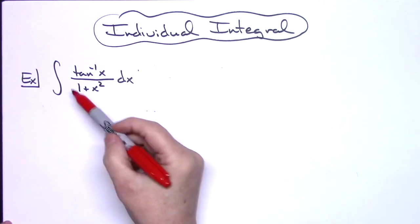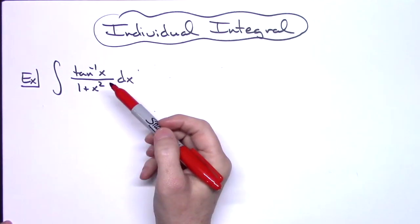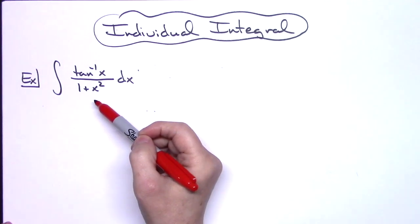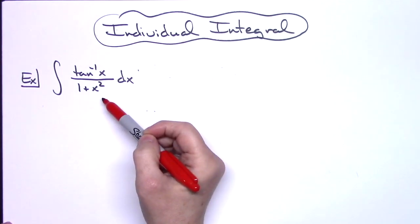Now normally when we have a rational function like this, we oftentimes will let that denominator be our u. However, if we do that on this particular problem it's not going to result in anything.